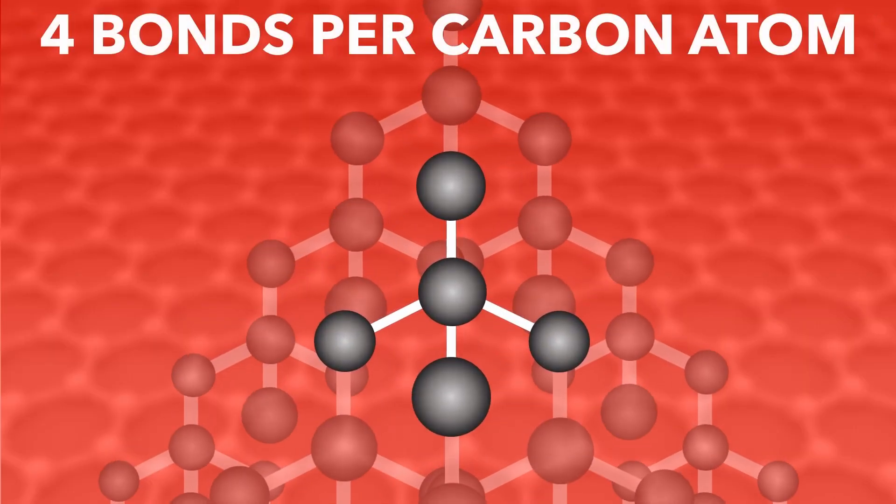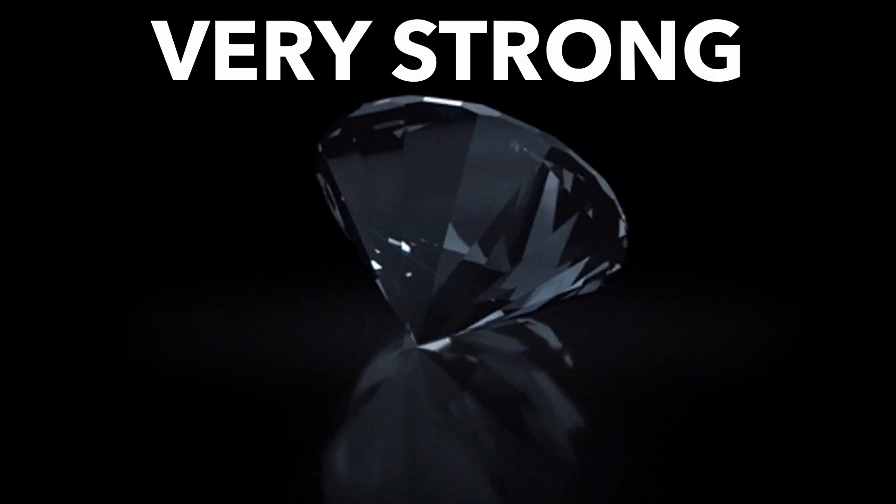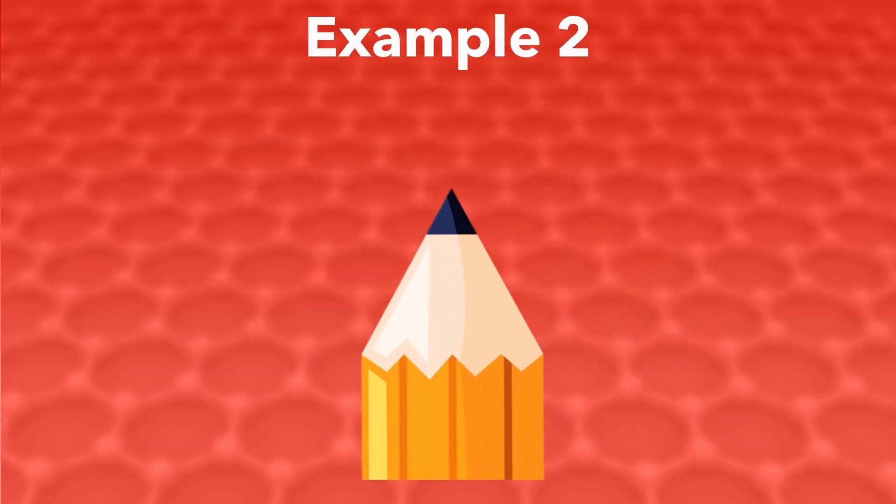Because there are four bonds per atom, it takes a lot of energy to break, making diamond very strong and with a very high melting point.